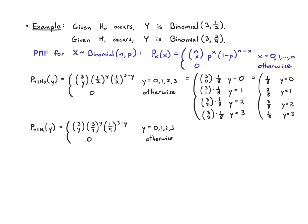There I'm going to see 3 choose 0 times 1 over 64 when y equals 0, 3 choose 1 times 3 over 64 when y equals 1, 3 choose 2 times 9 over 64 when y equals 2, and 3 choose 3 times 27 over 64 when y equals 3.